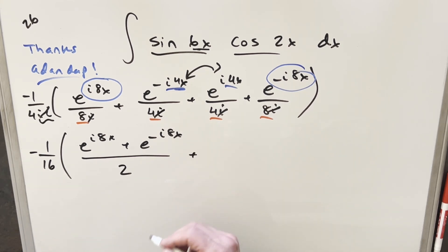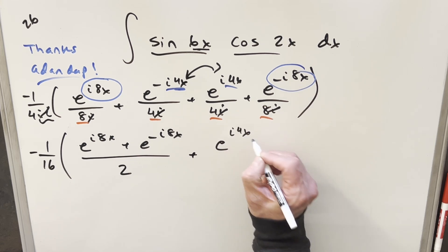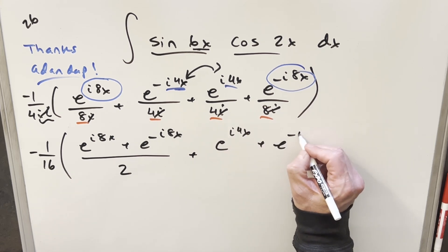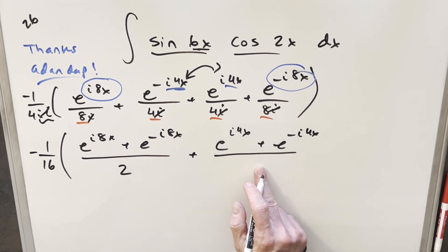And then with these terms, I'm just going to switch the order because I want the positive one first because we're trying to get it into the form. We're trying to get into the complex definition for cosine. So when I rewrite this, we're going to have this as e^(i4x) plus e^(-i4x). And then we factor out the 4. So we just have a 1 here right now.